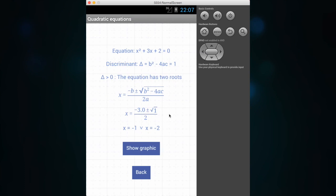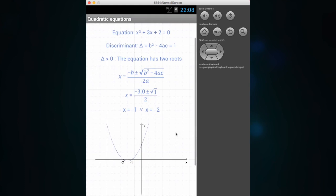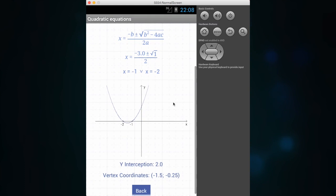The discriminant is positive so we have two roots, and according to the quadratic formula we have here the result. We can also now click here on show graphic. It shows us a graphical representation of our function.